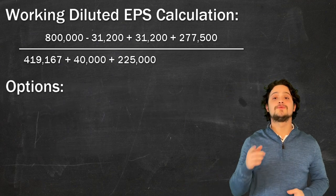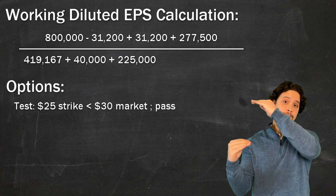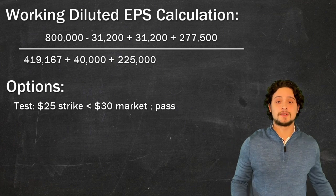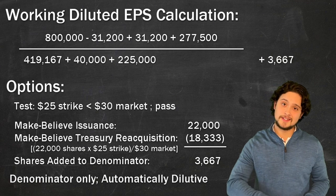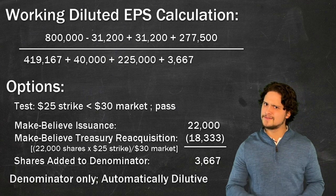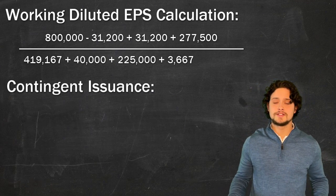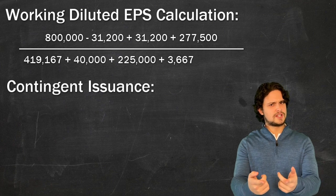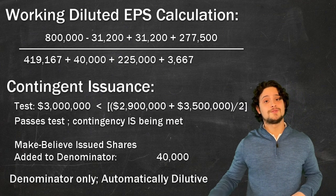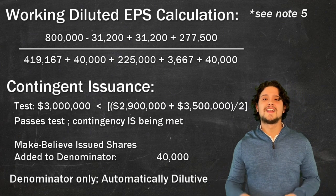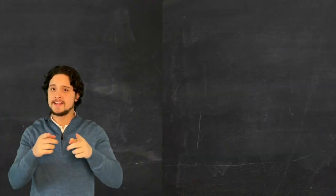Before we start with the options, we need a preliminary test to strike — price gotta be lower than the market to make sense. Pretend they're issued, then use market price to buy some back — net shares at the bottom. On our plate, we gotta check contingencies — whatever metric that they use, is it met sufficiently? If it isn't, go and add the issued shares below the line. And after all of these dilutive calculations, EPS is looking fine.